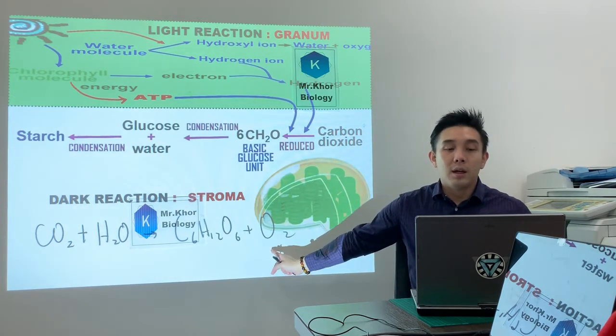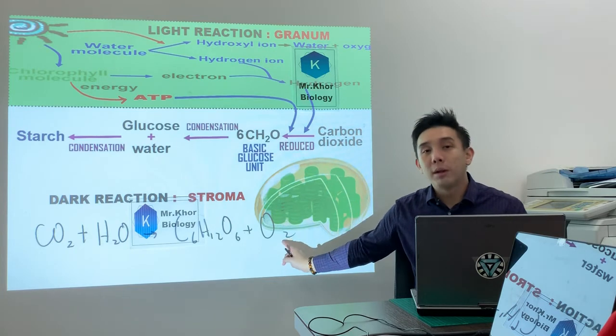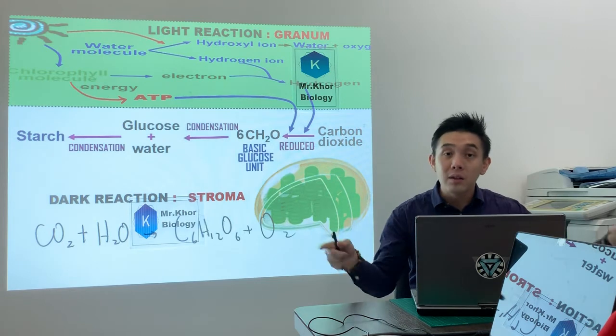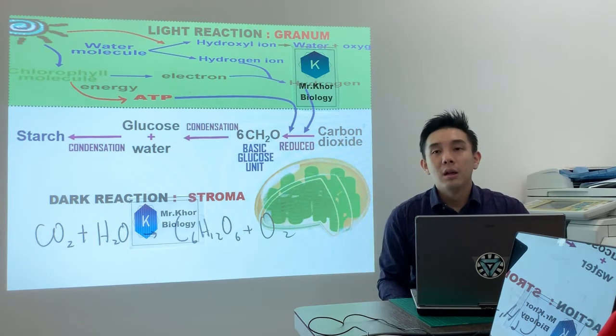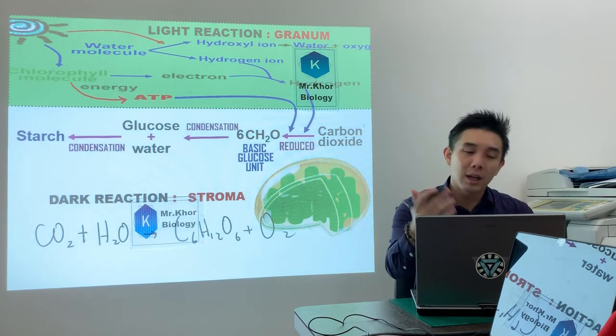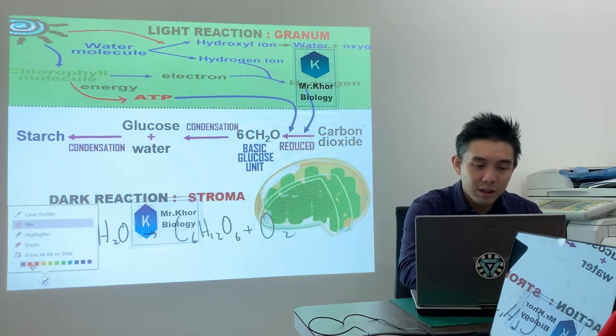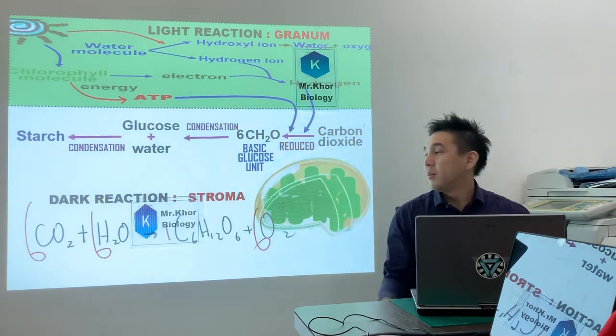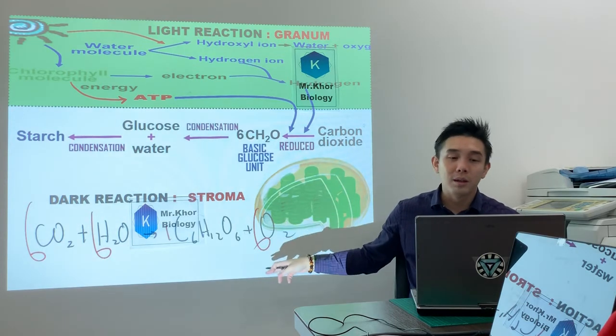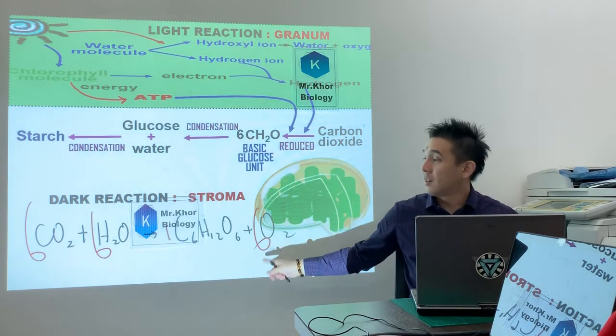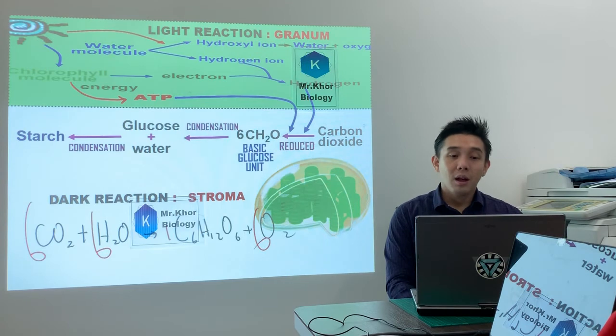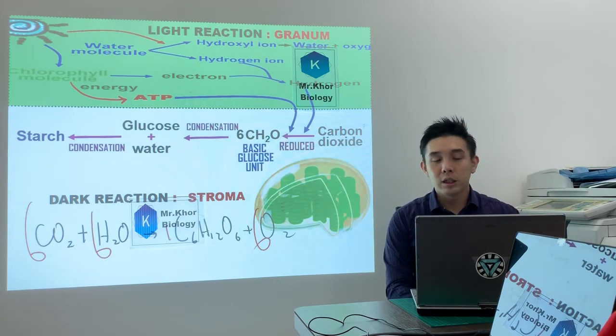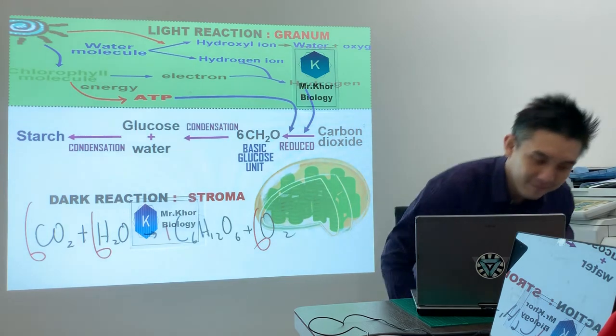One common question I get is: do I need to balance the equation? No need, but I love balancing, so go ahead. It's quite simple - 6, 6, 1, 6. Remember this total number: 6, 6, 1, 6. All right, that's all for light and dark reaction. I'm Mr. Khor, thank you.